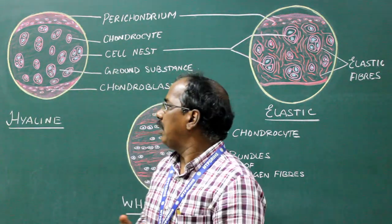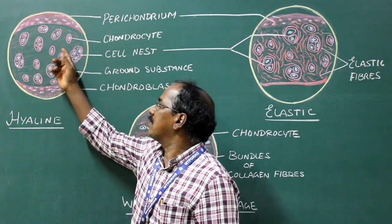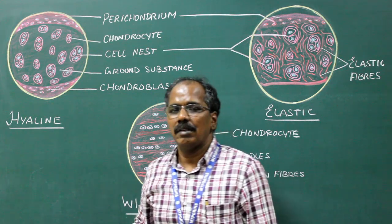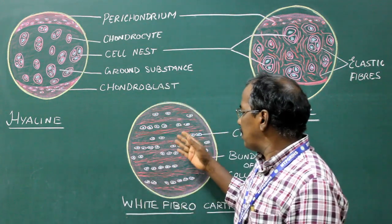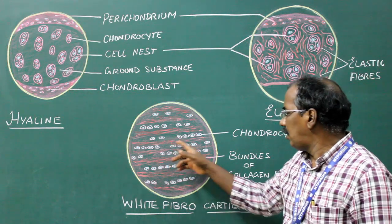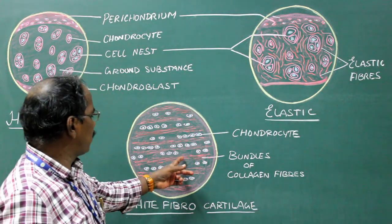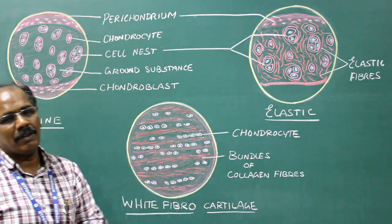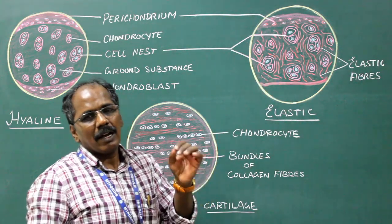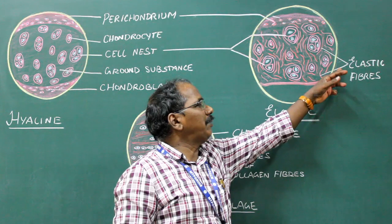The hyaline cartilage has a fine ground substance. That is, ground substance is fine and smooth. The ground substance of white fibrocartilage has bundles of collagen fibers. The ground substance of elastic cartilage consists of coarse elastic fibers.